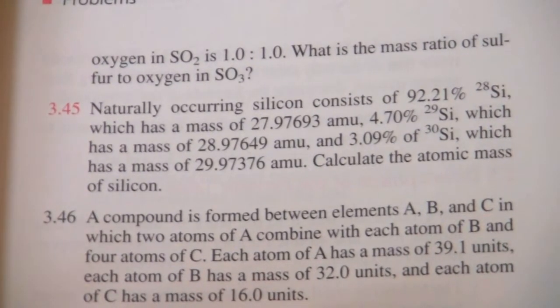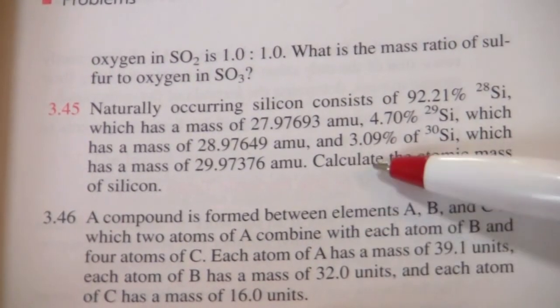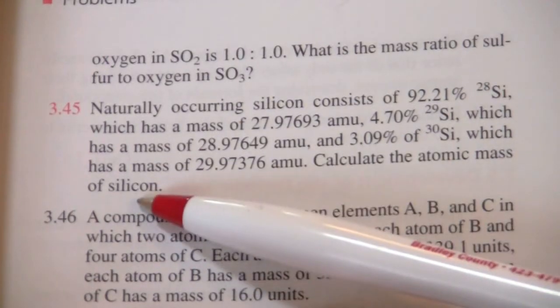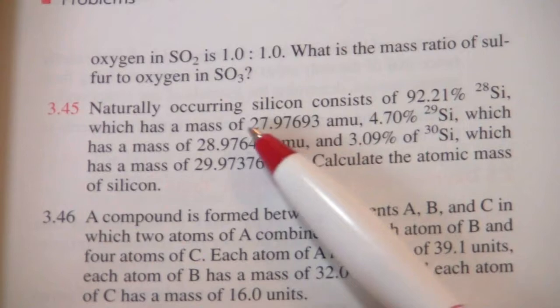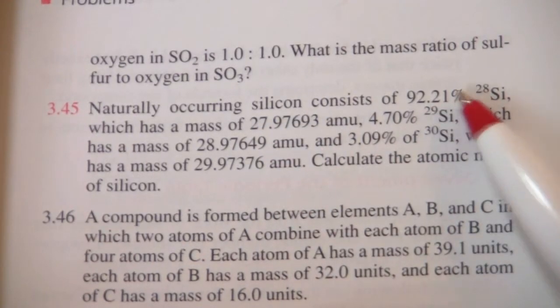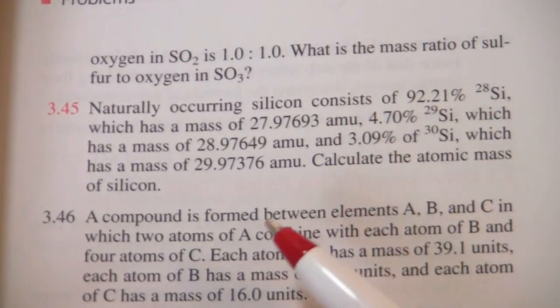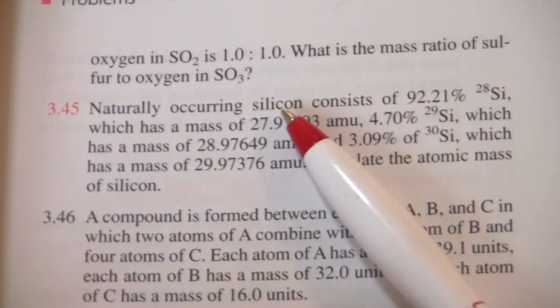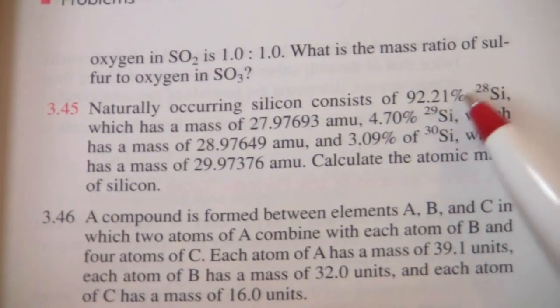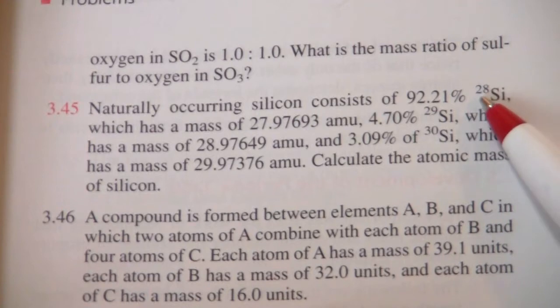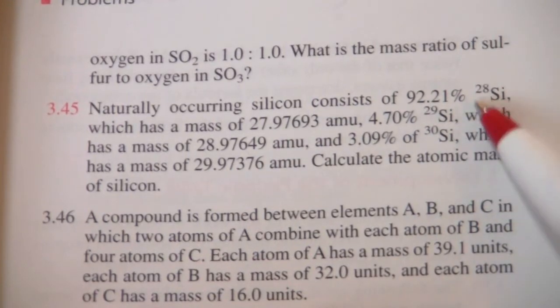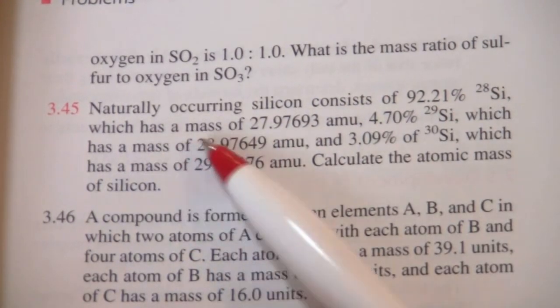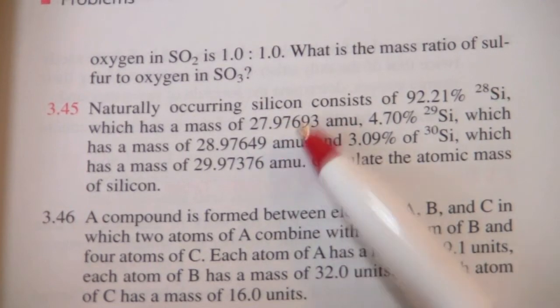Here's a problem that asks us to calculate the atomic mass of silicon based on the percent abundances of its different isotopes. It says naturally occurring silicon consists of 92% silicon-28, that is the mass number of that isotope of silicon, and it has this mass.